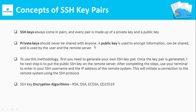To use this authentication methodology, first you need to generate your own SSH key pair. Once the key pair is generated, the next step is to put the public SSH key on the remote server. After completing these steps, use your terminal to enter your SSH username and the IP address of the remote system. This will initiate a connection to the remote system using the SSH protocol. In the client terminal, you need to mention your private key. These are the encryption algorithms used to create these SSH keys — you should choose any one of these algorithms at the time of creation.